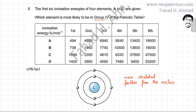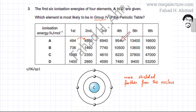Let's look at the successive ionization energies of all the elements A, B, C, and D. Looking at A first: removing the first electron is very easy, but removing the second electron becomes drastically difficult, which means that the first electron was in the outermost shell and the rest of the electrons are in inner shells. So A only has one electron in its outermost shell.